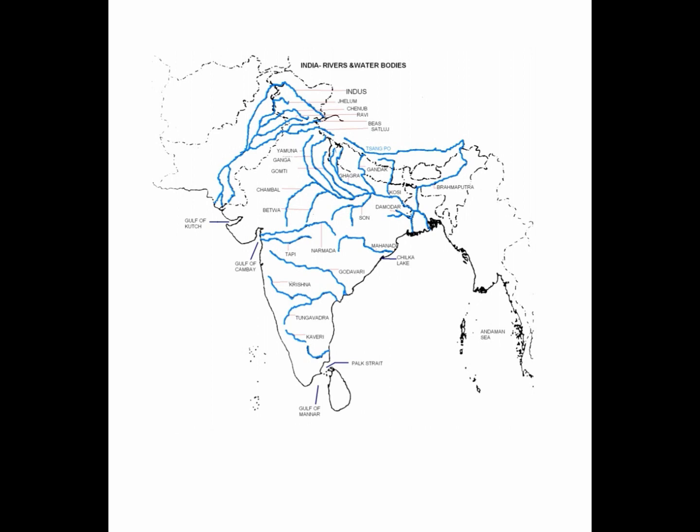River number 9 is a small river known as Damodar, also in the northeastern region. If you see below Ganga, where Ganga and Brahmaputra meet, close to that point there is river Damodar. The tenth and last river is on the eastern coast — river Mahanadi. One end of Mahanadi is very close to Narmada.